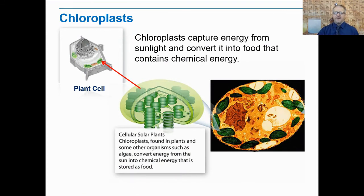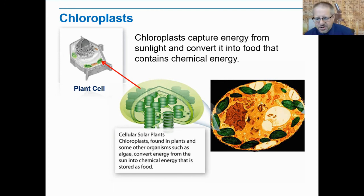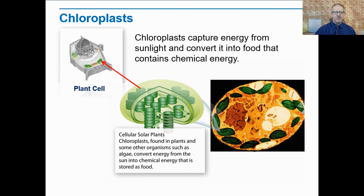Let's move on to chloroplasts. We only find chloroplasts in plant cells and some other organisms like algae, and some bacteria have chloroplasts too. They're able to produce energy through photosynthesis, so they're photosynthetic. Animals and humans do not contain chloroplasts. Think of chloroplasts as the solar collectors — like solar panels on the roof of a house. In photosynthesis, plants take the solar energy collected in the chloroplasts and convert it into food molecules, going from solar energy to chemical energy.